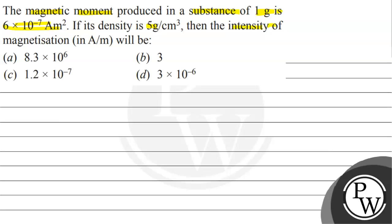then the intensity of magnetization will be: Option A: 8.3 × 10⁶, Option B: 3, Option C: 1.2 × 10⁻⁷, and Option D: 3 × 10⁻⁶.